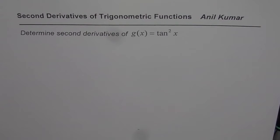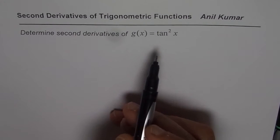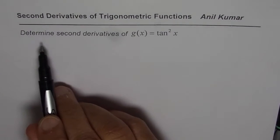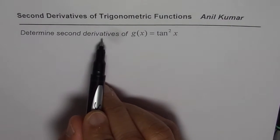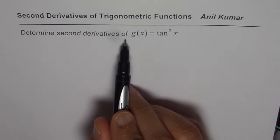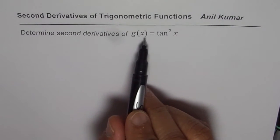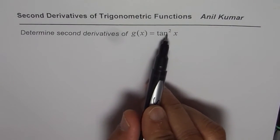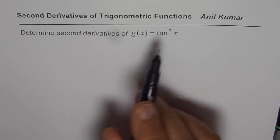I am Aal Kumar. Let us practice second derivative of trigonometric functions. The question here is: determine the second derivative of g of x equals tan square x.